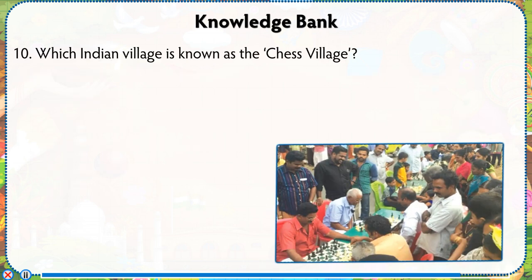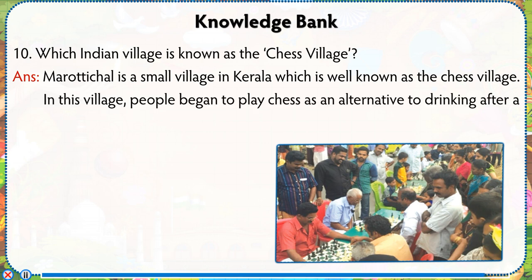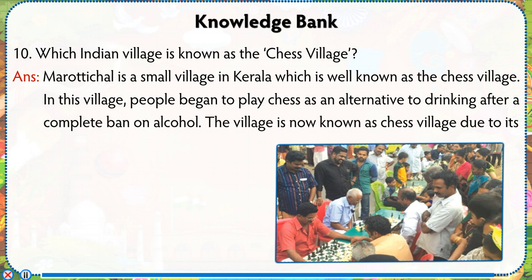Number 10: Which Indian village is known as the Chess village? Answer: Marottichal is a small village in Kerala which is well known as the Chess village. In this village, people began to play chess as an alternative to drinking after a complete ban on alcohol. The village is now known as Chess village due to its 100% chess literacy rate.